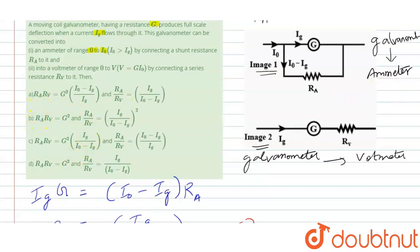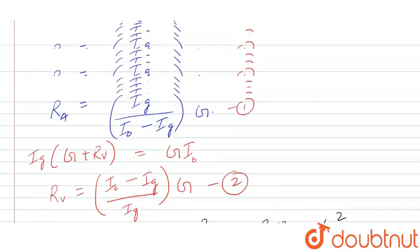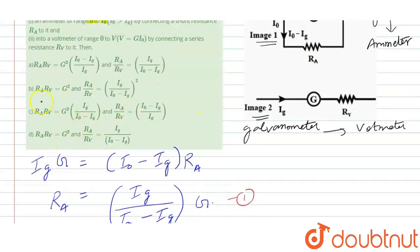Option B is correct, right? See, RA times RV is G square and RA upon RV is IG upon I0 minus IG, the whole square. So option B is correct. Thank you, students.